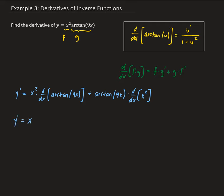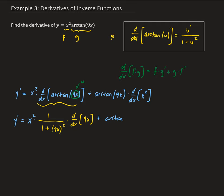So then we're going to get y prime equals 2x squared. Taking the derivative of arctan of 9x, we apply the arctan rule: 1 over 1 plus u squared, where u is 9x, the argument of arctan. So we have 1 over 1 plus 9x squared, times the derivative of 9x with respect to x, plus arctan of 9x times the derivative of x squared, which gives us 2x.